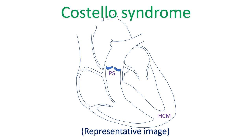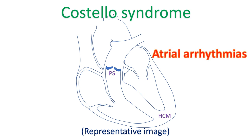Costello syndrome is a RASopathy caused by mutations in HRAS. Associated cardiovascular abnormalities include pulmonary stenosis, hypertrophic cardiomyopathy, septal defects, and aortic dilatation. Atrial arrhythmias may be seen in half of the patients. These are non-reentrant atrial tachycardias, namely ectopic atrial tachycardia and multifocal atrial tachycardia (MAT), also called chaotic atrial tachycardia.